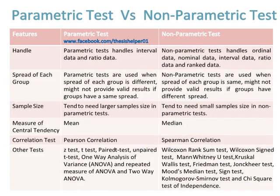Parametric tests handle interval data and ratio data, while non-parametric tests handle ordinal data, nominal data, interval data, ratio data, and rank data. Parametric tests are used when the spread of each group is different and might not provide valid results if groups have the same spread, while non-parametric tests are used when the spread of each group is the same and might not provide valid results if groups have different spread.